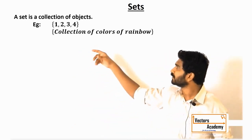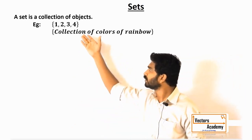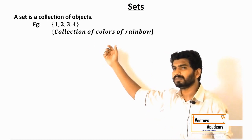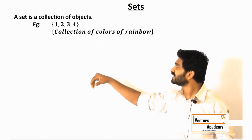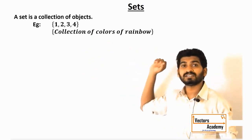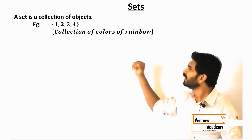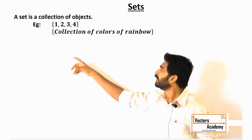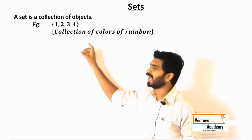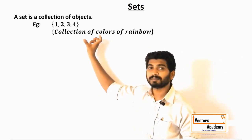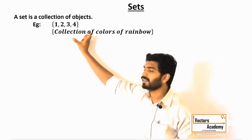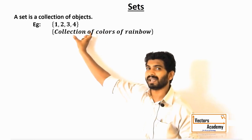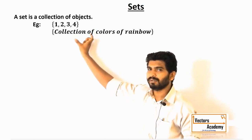Look at these simple examples. These are two sets. The first set contains a set of numbers. The second set contains the colors in the rainbow. Sets are usually represented by curly brackets, and the elements which are present in the set are represented inside the curly brackets.